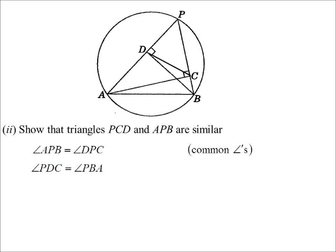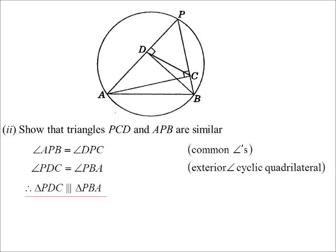Well, now that I know that that's a cyclic quad, I can use exterior angles of a cyclic quad. And so therefore, I only need two angles to prove similarity. So I've got two angles. So equiangular or angle-angle, however you want to write that one.